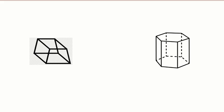Alright guys, today we're going to talk about two more prisms. The first one is called a trapezoidal prism, because the base is indeed a trapezoid. We define a prism based on the shape of its base, and the base consists of two congruent sides.